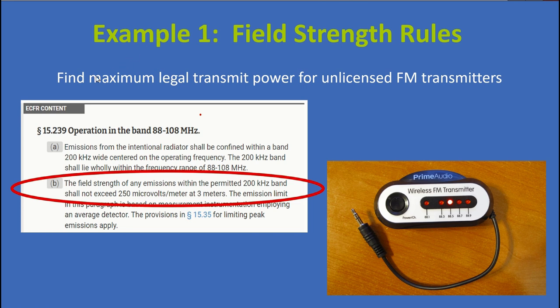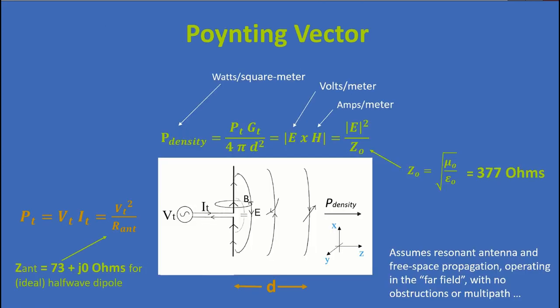So, let's look at example one. How can we find the maximum legal transmit power for an unlicensed FM transmitter? We know the field strength cannot be larger than 250 microvolts per meter at 3 meters. So, to solve this problem, we have to bring in something called the pointing vector. Our electromagnetic field is carrying a certain amount of power with it. And that power ultimately came from the transmitter on the left.